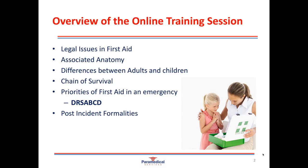In this online training session we will be discussing the legal issues surrounding first aid. Then we'll look at the anatomy of the airway, the respiratory system and the cardiovascular system to help us understand why we do certain things during CPR and defibrillation. We'll pay special note to the differences between adults and infants and children, then look at the chain of survival and DRS ABCD, and finally post-incident formalities.